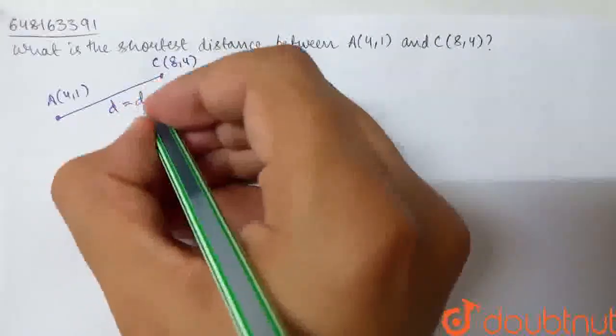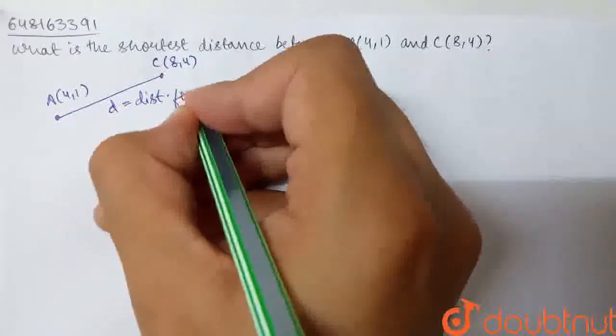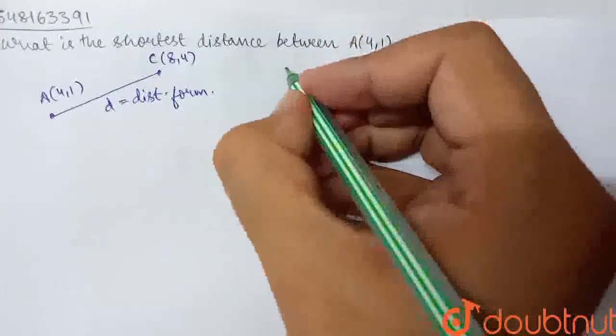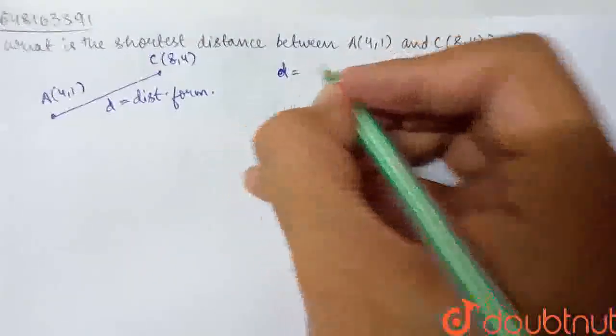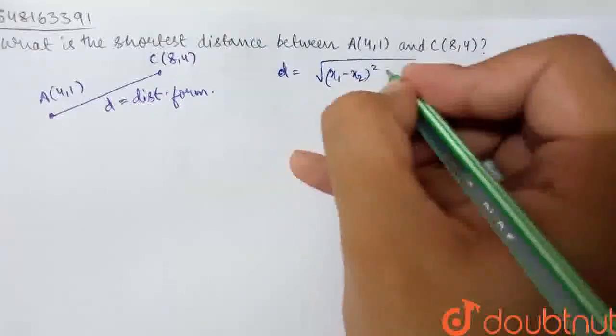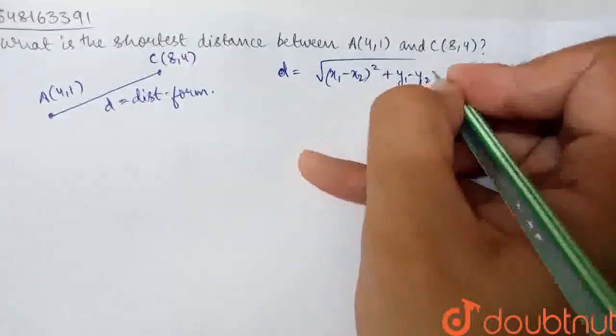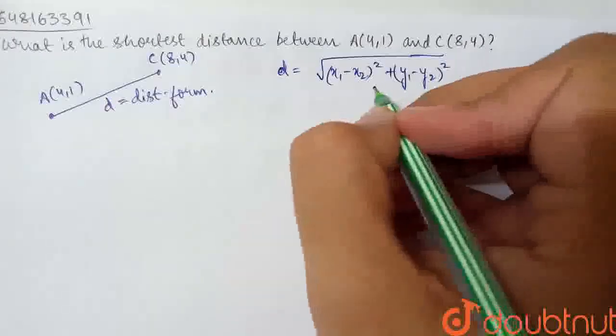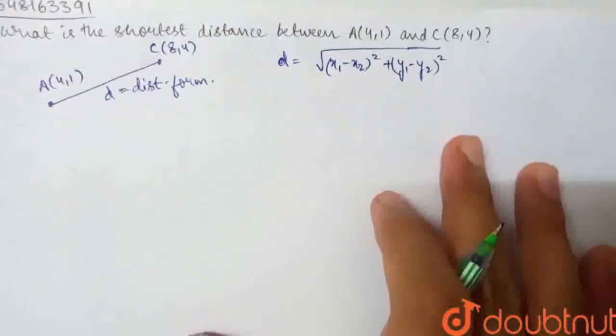So how do we use this? Basically, we can use the distance formula. The distance between any two points D is given by root of x1 minus x2 whole square plus y1 minus y2 whole square, where x1, y1 and x2, y2 are the coordinates of the two given points.